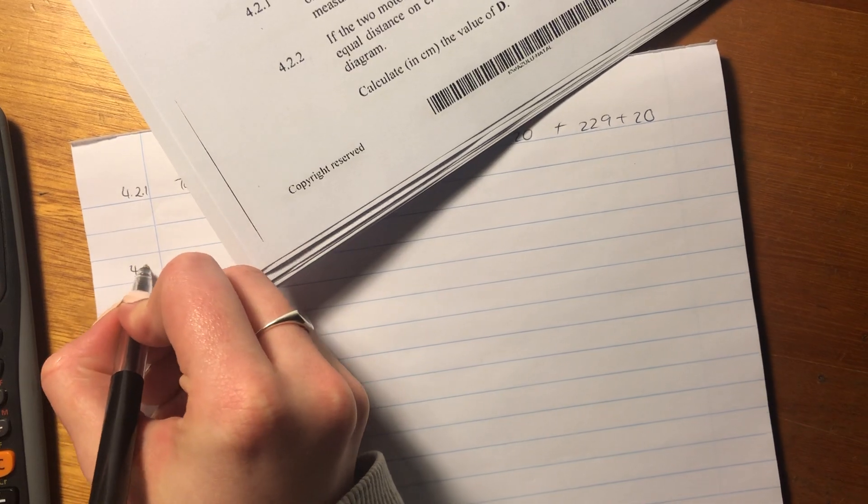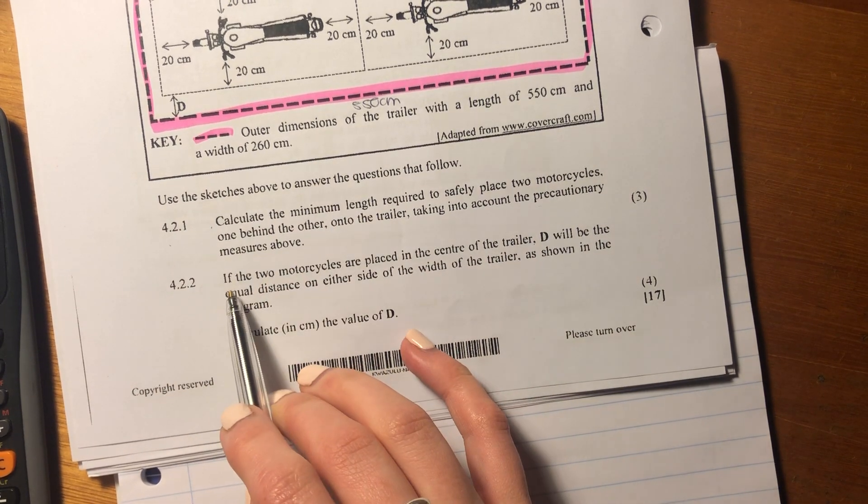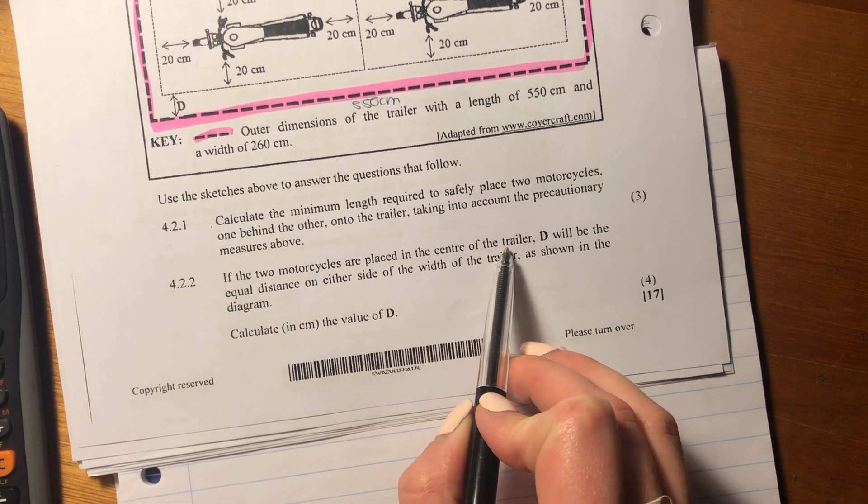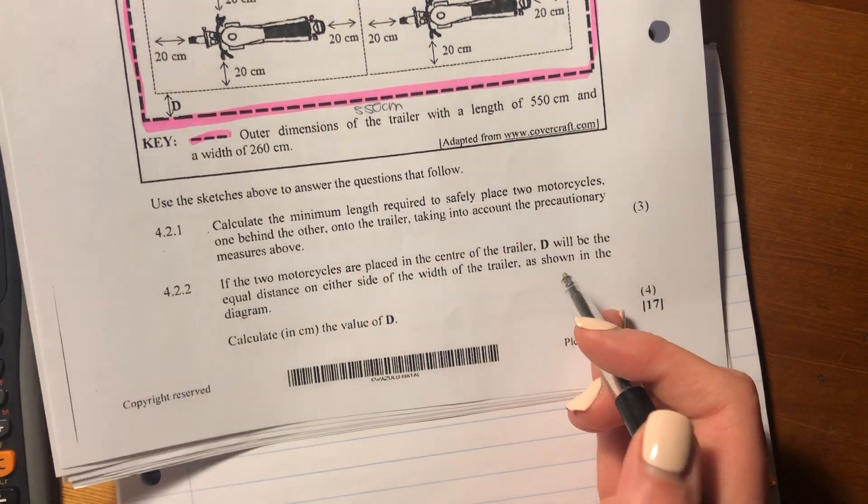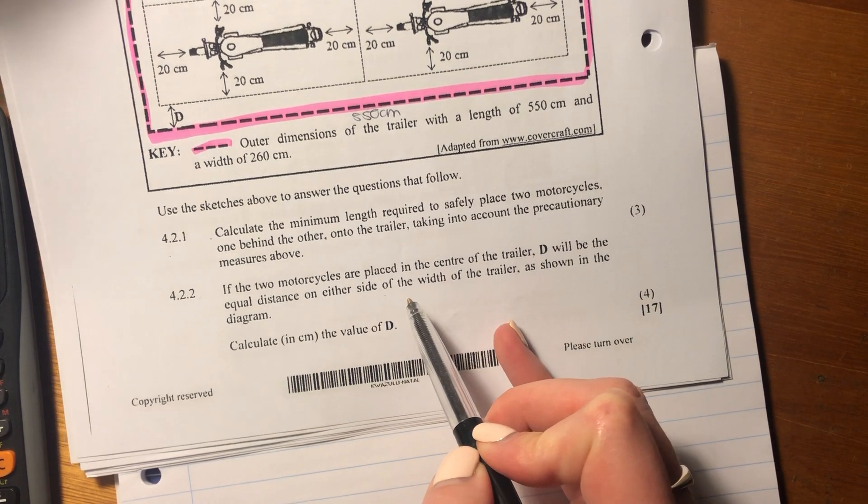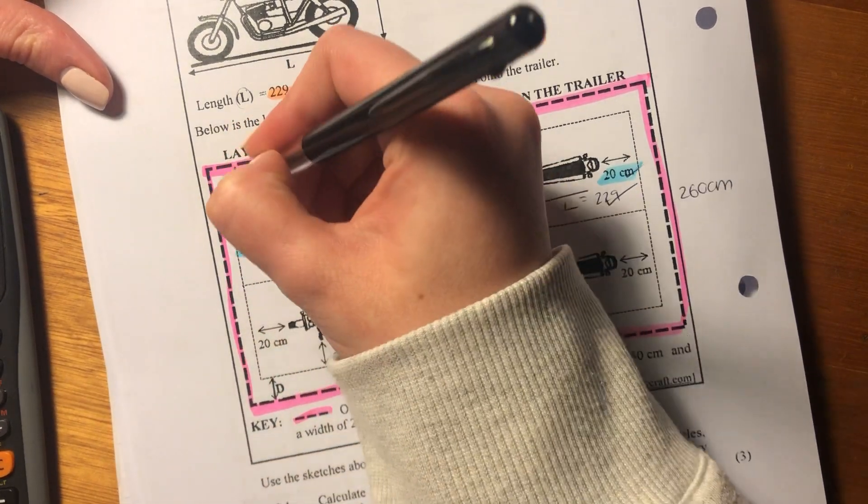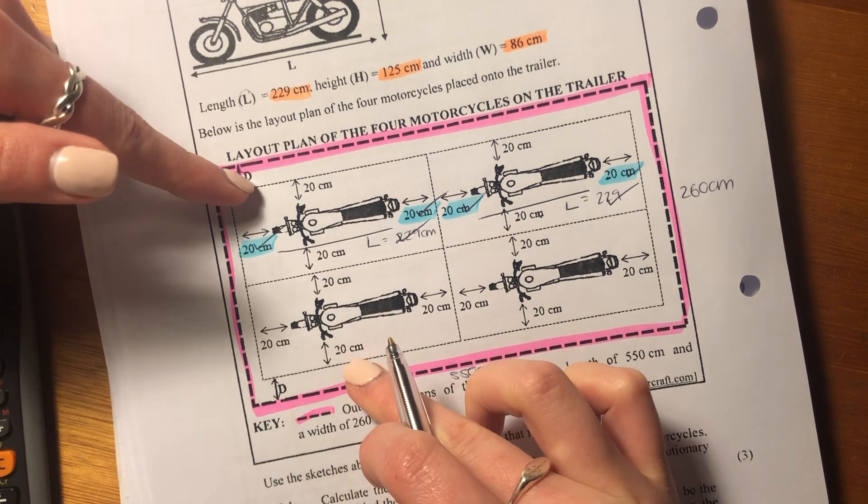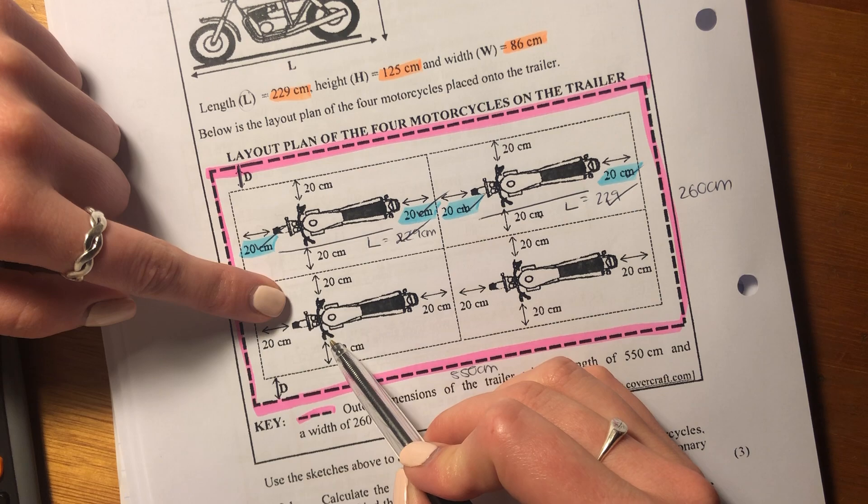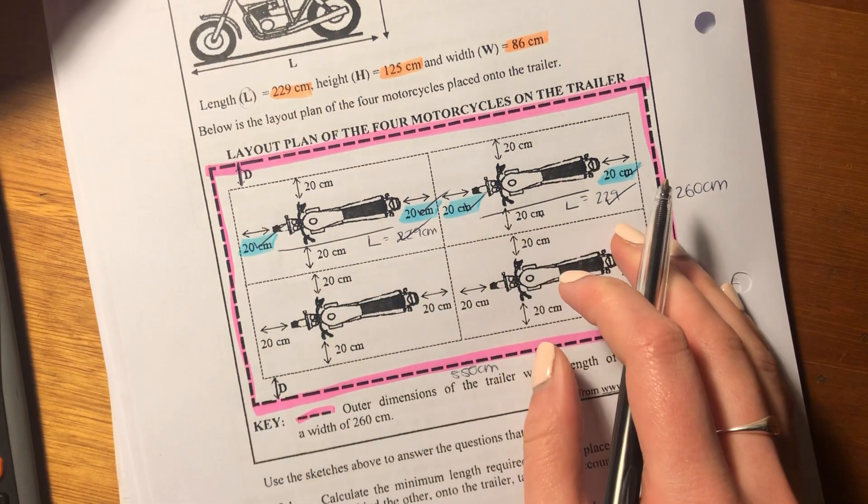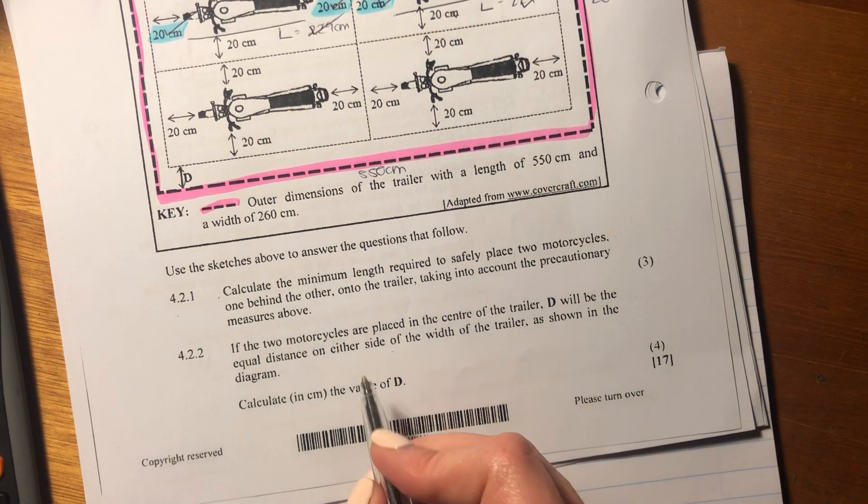Let's now look at 4.2.2. So now we've done that. Now it says, if the two motorcycles are placed in the center of the trailer. So basically, remember when something's in the center, it's directly in the middle. D will be the equal distance on either side of the width of the trailer as shown in the diagram. So it's basically saying this is the space on either side of the trailer. That is not needed necessarily as part of either the width of the motorcycle or the 20 centimeters precautionary space on either side. So it's like the excess space. It says calculate in centimeters the value of D.